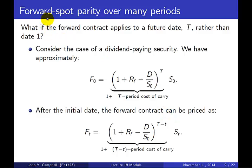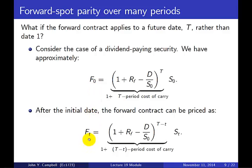What happens if we have a forward contract that applies over many periods? If the forward contract is for a future date T rather than date one, we compound the gross cost of carry — (1 + cost of carry) — over T periods. This compounded quantity is called the T-period cost of carry. That's the pricing at the initial date. After the initial date, say at date t, the forward contract is priced by updating: we update the spot price to S_t and compound the cost of carry over (T minus t) remaining periods.